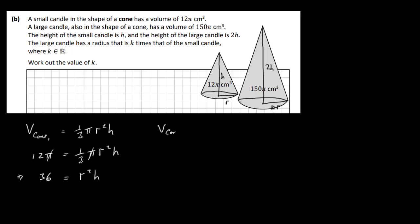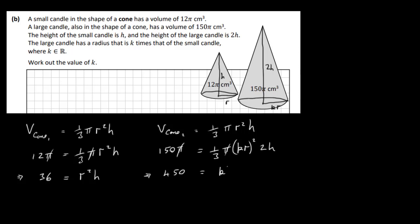The volume of cone 2 is also ⅓πr²h. So ⅓ × π × (kr)² × 2h = 150π. Multiplying across by 3, the π's cancel, giving k²r² × 2h = 450. Dividing by 2 gives k²r²h = 225.